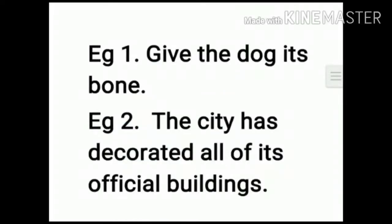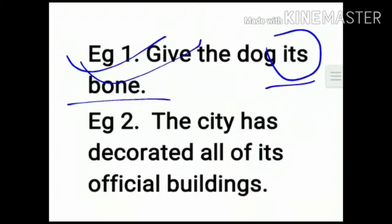See the example. Example 1: Give the dog its bowl. Now see this it. This is the possessive form of it, without apostrophe. We're talking about the dog's bone, showing possession, so which it will be used? This it will be used without apostrophe.